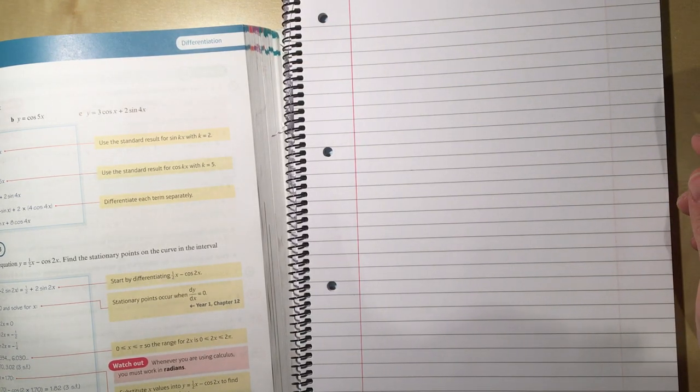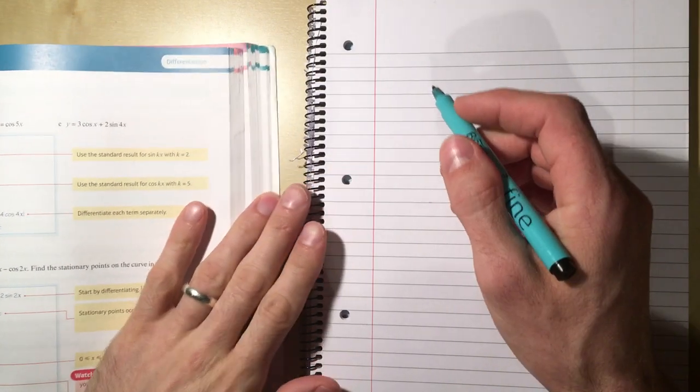Chapter 9, and we're starting on differentiation. We're going to start by looking at the derivative of sine and the derivative of cos.